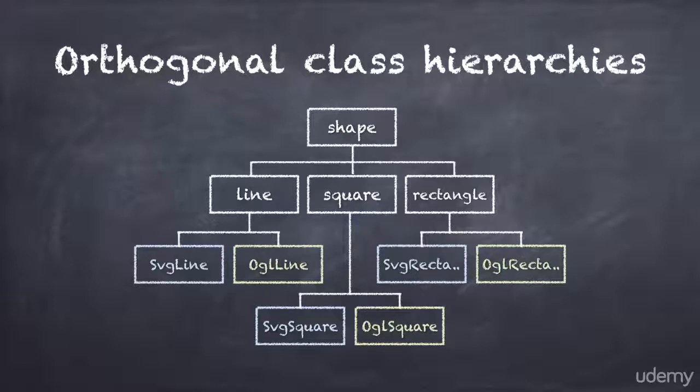The problem here is that we are trying to shoehorn the implementation class hierarchy into the shape class hierarchy. And these two have nothing in common. And attempting to combine them only leads to a very large object tree.